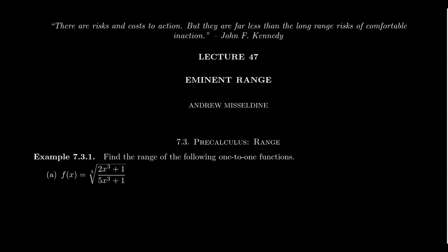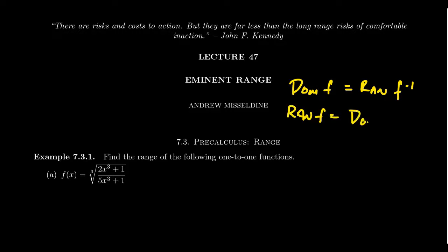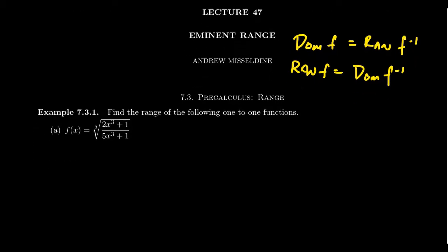Basically, we want to rely on the graph of the function to determine its range, which requires knowing a lot about the graphs of functions, their asymptotics and discontinuities. But there is one simple approach: one way to compute the range for a one-to-one function — those functions which pass both the vertical and horizontal line test — is to compute the domain of the inverse function, because the range of a function equals the domain of its inverse. So if we know how to compute the domain, we can compute the range if the function is invertible.